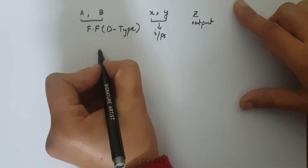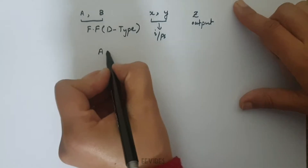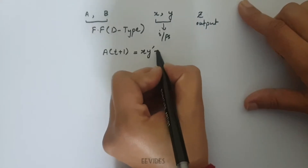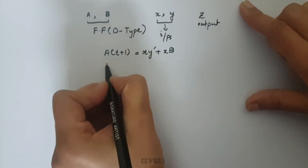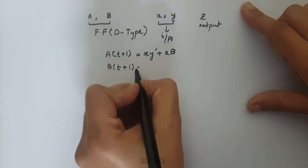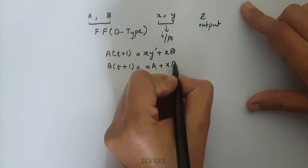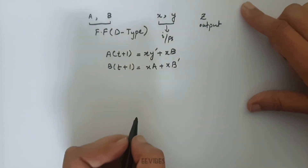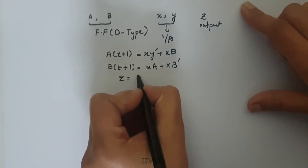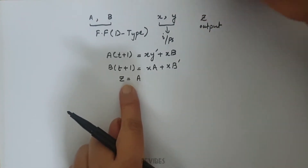The next state equations and the output equations are given as: A(T+1) is equal to XY complement plus X into B. Similarly, for the next flip-flop, B(T+1) is equal to X into A plus X into B complement. And finally, the output equation is given as Z is equal to A, the current state of the first flip-flop.